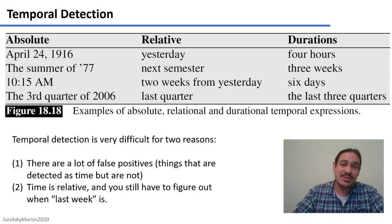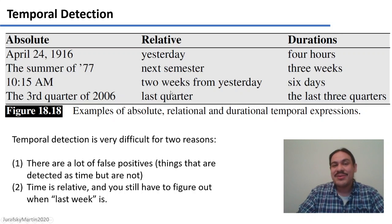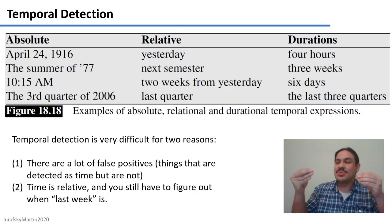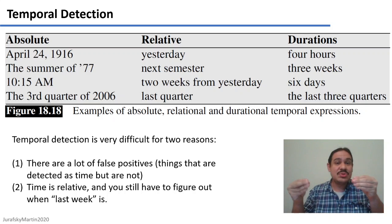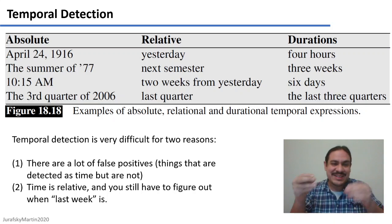Another reason why temporal detection is difficult is that time is relative. If you have words like yesterday, tomorrow, last quarter, these words don't mean anything outside of their context. You need to figure out if there's some sort of anchor, like an absolute time that you can link them to, so that then you can figure out when exactly yesterday is.